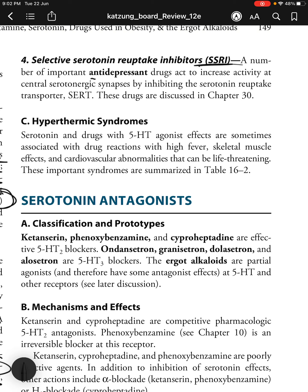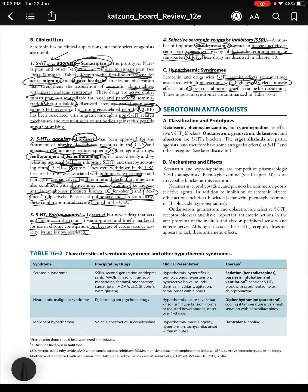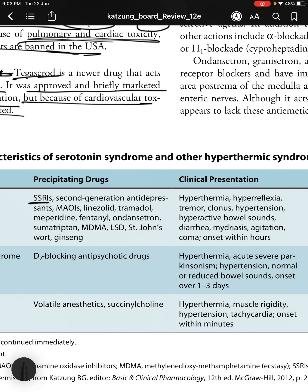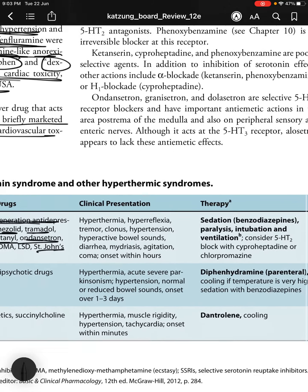Selective serotonin reuptake inhibitors (SSRIs) are important antidepressant drugs that increase activity at central serotonergic synapses by inhibiting the serotonin reuptake transporter (SERT). Hyperthermic syndromes: serotonin and drugs with 5-HT agonist effects are sometimes associated with drug reactions featuring high fever, skeletal muscle effects, and life-threatening cardiovascular abnormalities. Precipitating drugs for serotonin syndrome include SSRIs, second-generation antidepressants, MAO inhibitors, linezolid, tramadol, sumatriptan, ondansetron, fentanyl, St. John's Wort, and ginseng.